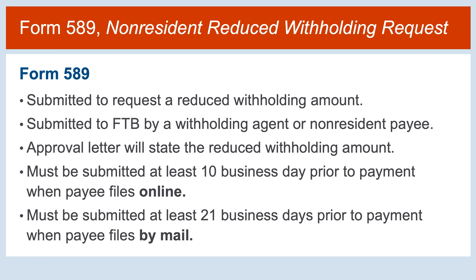Withholding on the gross payment is required unless the request is approved by FTB prior to the payment of California source income. If approved, FTB will provide an approval letter to the payee and withholding agent indicating the approved reduced withholding amount. The withholding agent retains a copy of the approval letter for a minimum of 5 years and must provide it to FTB upon request.